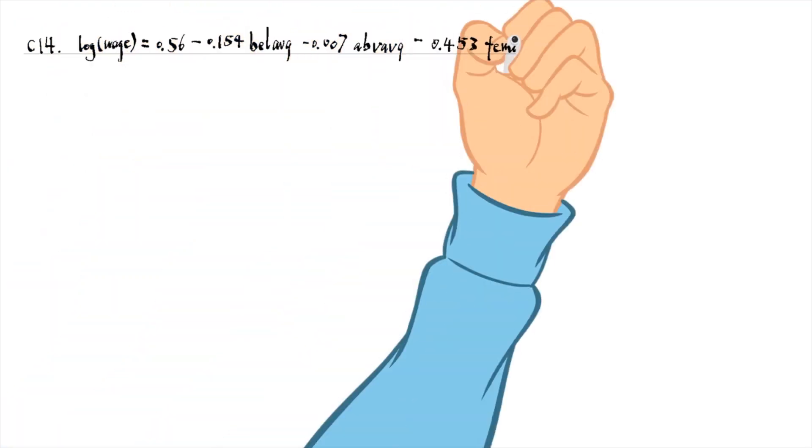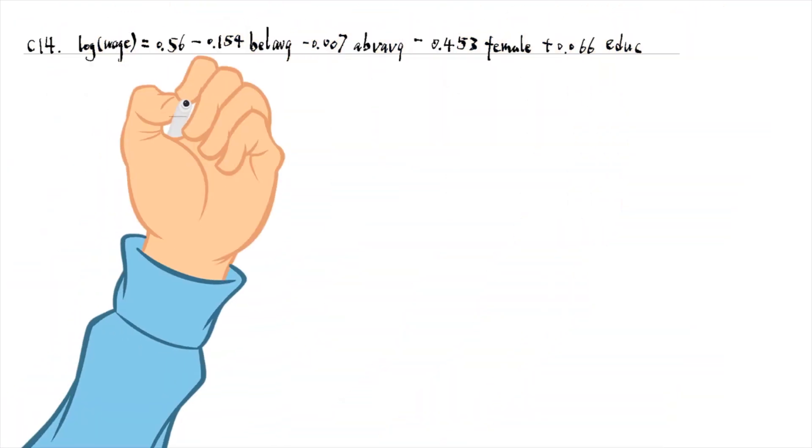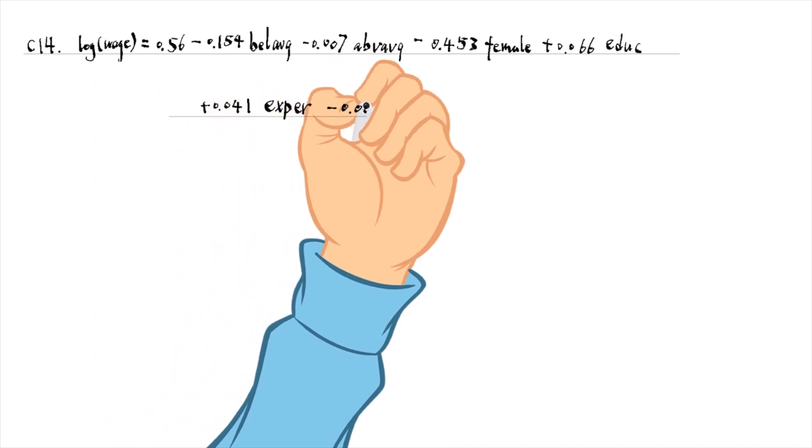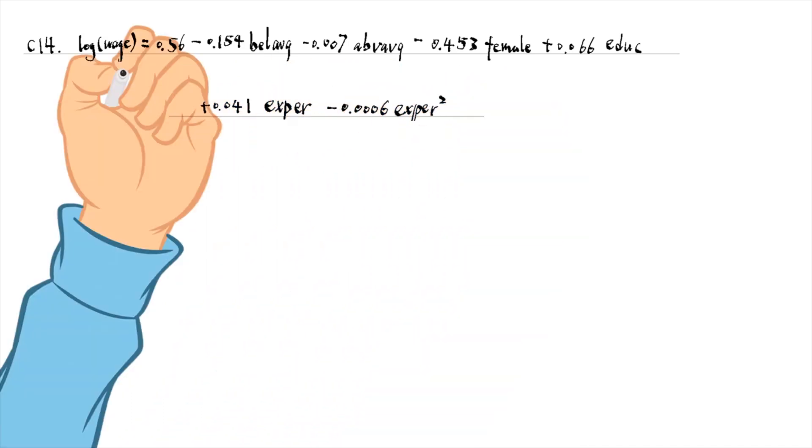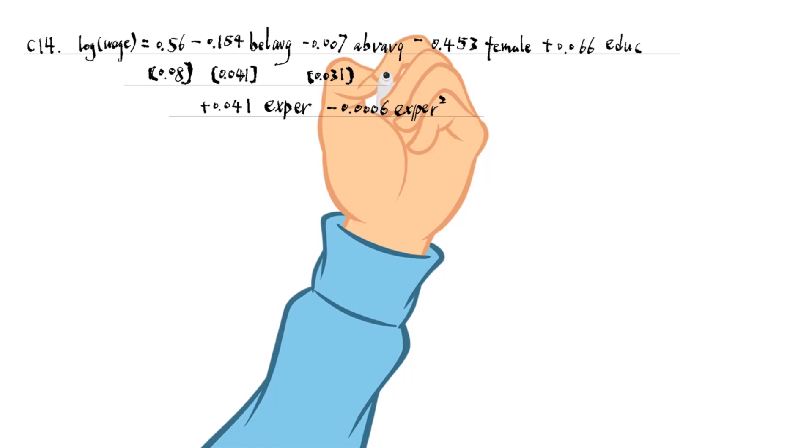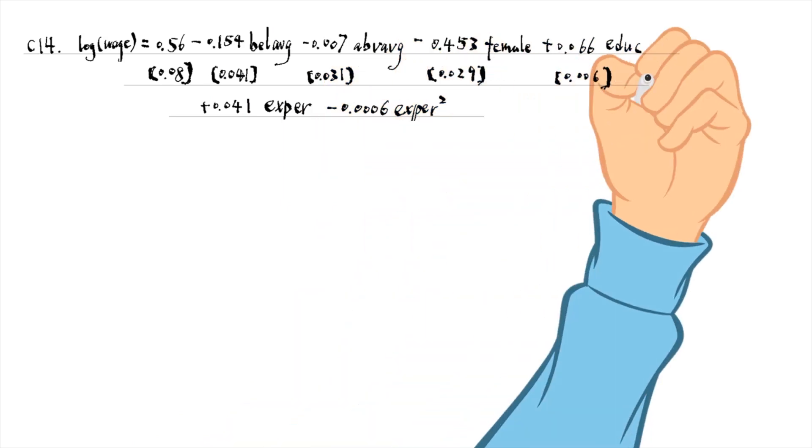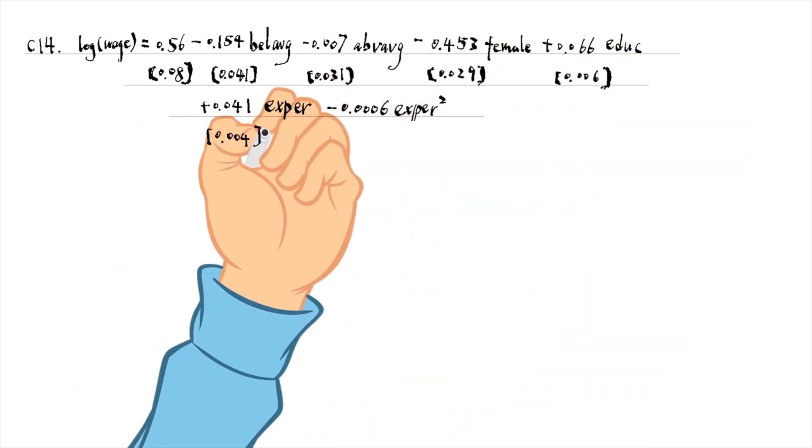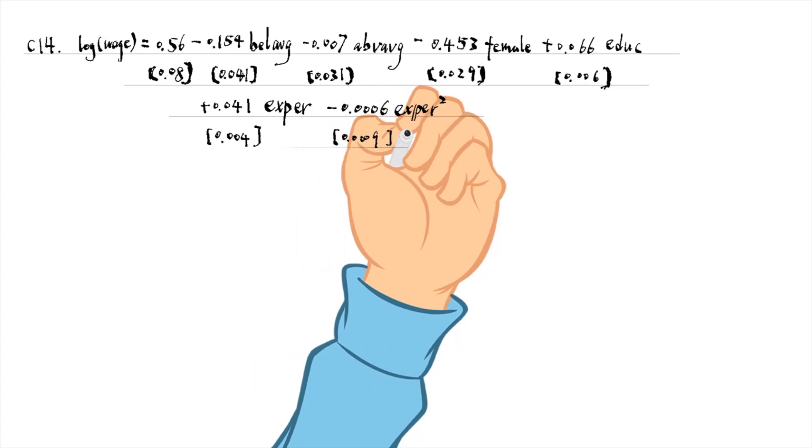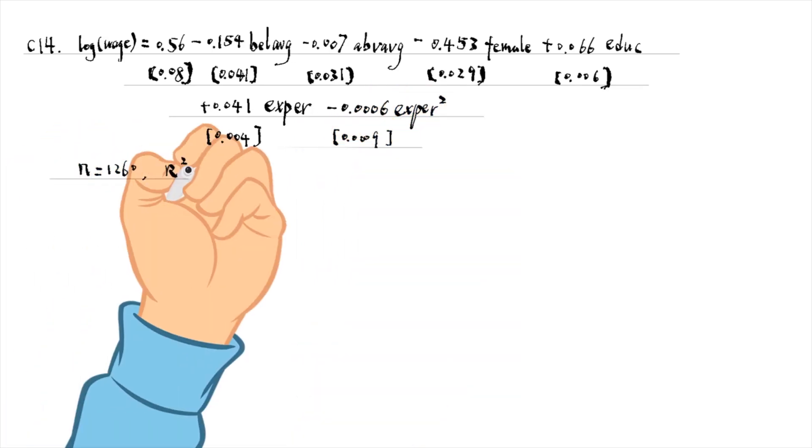The VCE option in Stata specifies the robust estimator of variance. The result does not surprise me. Below average looking negatively affects wages.